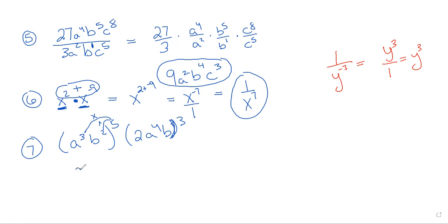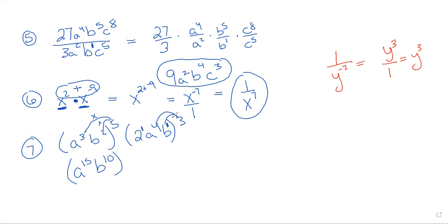So we're going to have a to the 15th power, because 3 times 5 is 15, and b to the 10th power. Now it gets a little tricky over here. For the second group: 3 times the exponent on b — remember, that's a 1 — so 3 times 1, and 3 times 4 for a. The 2 has an exponent of 1 also, so it's 1 times 3. So we get 2 to the 3rd power, a to the 12th power, and b to the 3rd power.